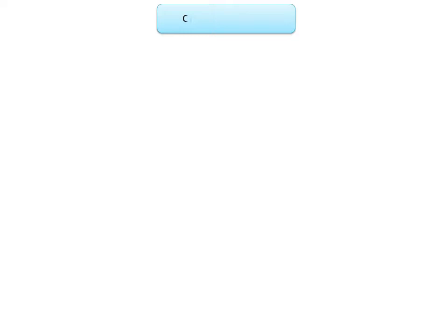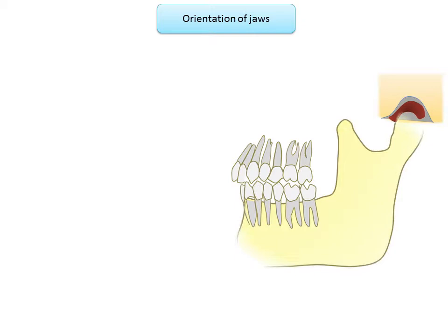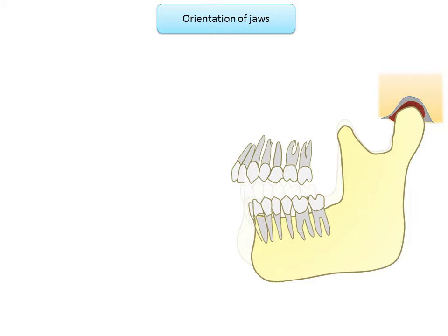In this video we'll discuss orientation jaw relation and hinge axis. The maxilla is a fixed entity. When the teeth of both jaws come in contact, the maxilla becomes related to the mandible, so the entire cranio-maxillary complex is articulated with a moving bone — the mandible. This maxilla is positioned uniquely to the lower jaw, and this position varies for every person.